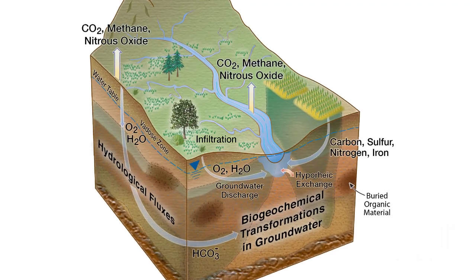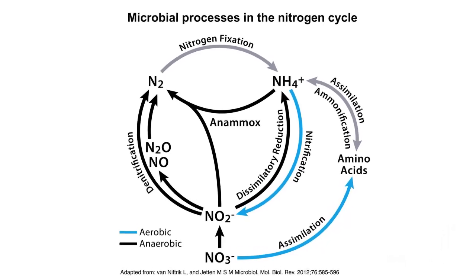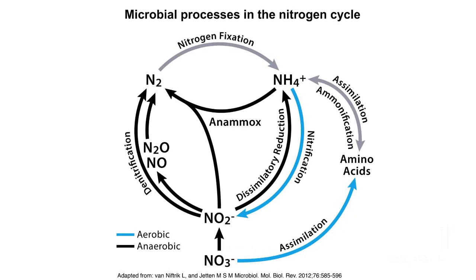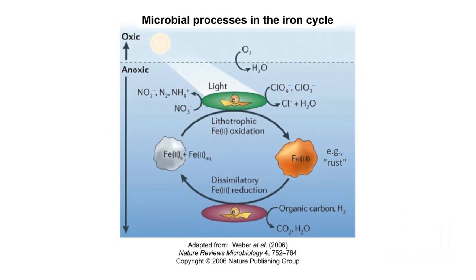We define metabolic potential as the collective metabolic capabilities of subsurface microbial communities. This is important because these communities mediate a lot of important biogeochemical cycles such as cycling of carbon, sulfur, nitrogen, and iron. In contrast to humans and other higher organisms, microbes collectively have an incredible metabolic diversity — they can break down wood, oxidize ammonia, and even respire rust. These capabilities influence biogeochemical cycles.